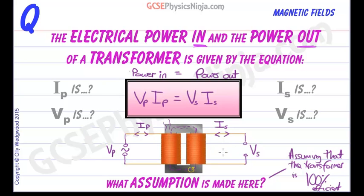So transformers are not 100% efficient in reality. But this equation is useful because it gives us a calculation for the ideal case. So we know in practice it probably won't be that far off the ideal case. So let's just label these up.